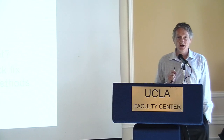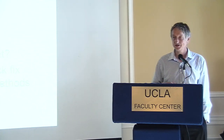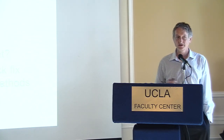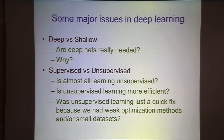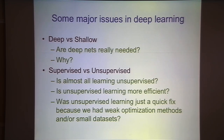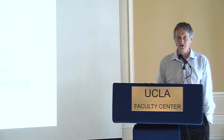Some major issues that will be discussed in deep learning: first, deep versus shallow — whether you really need deep nets to do interesting things, and if so why. It's been quite hard to show what you can do with deep nets that you can't do with shallow nets. Wide shallow nets can do a lot of things, though there are some things they can't do efficiently. Yoshua Bengio is going to talk more about that.